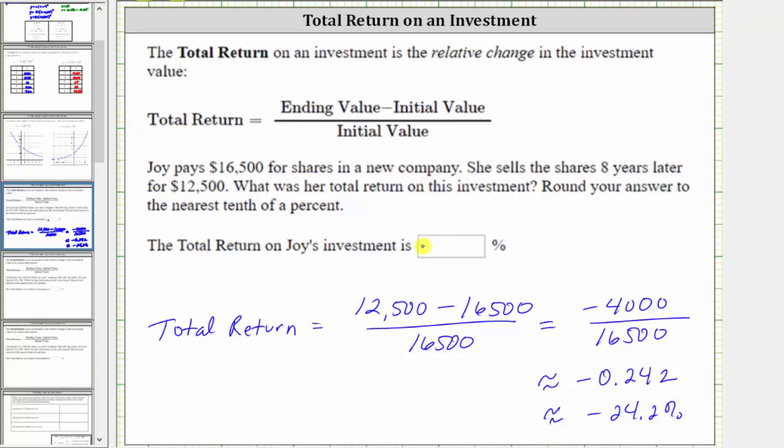It's negative because she experienced a loss in this investment. Notice how she bought the shares for $16,500 and then she sold them eight years later for $12,500, which is a loss of $4,000, which shows here in the numerator.